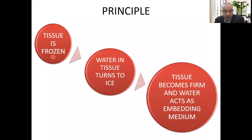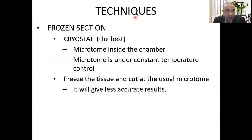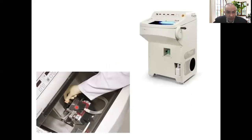The principle of tissue freezing: the water inside the tissue turns into ice, the tissue becomes firm, and the water acts as the embedding medium. A refrigerator is used for preservation. The tissue is turned into ice so it can be cut. The technique uses the cryostat — a microtome inside a chamber under constant temperature control. There is another technique that can freeze tissue and cut at a usual microtome, but it does not have accurate results. This is the cryostat: the microtome inside the refrigerator.